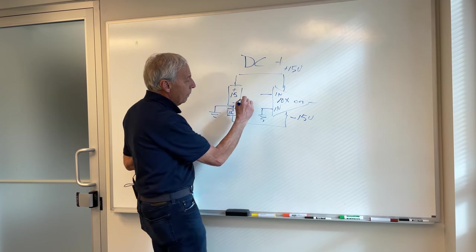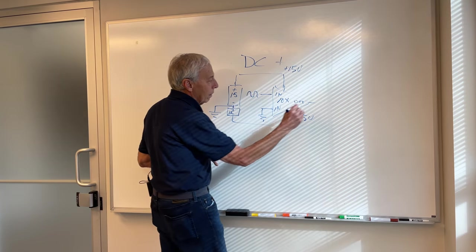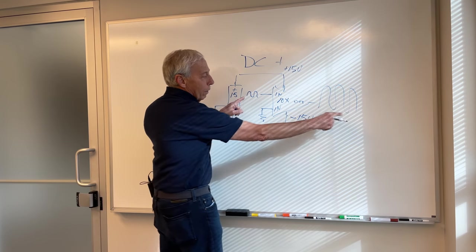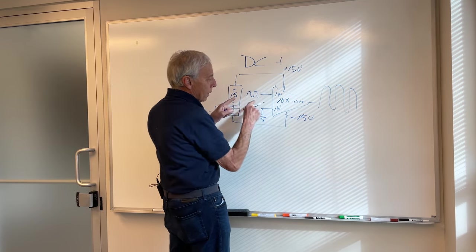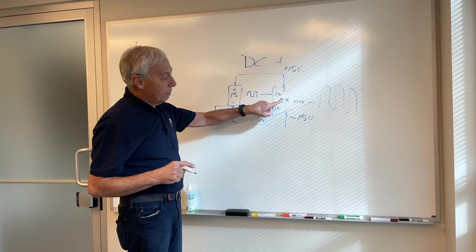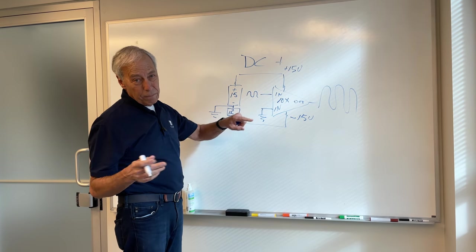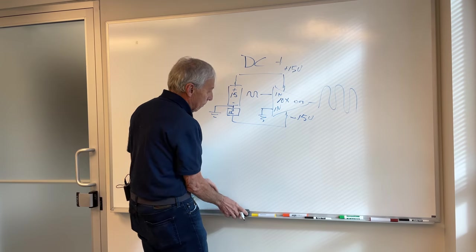So if I have a little wiggle here, I get 10 times a wiggle over here, that's 10 times bigger than what I put in. That's times 10, which is 20 dB, but we don't need to know that.